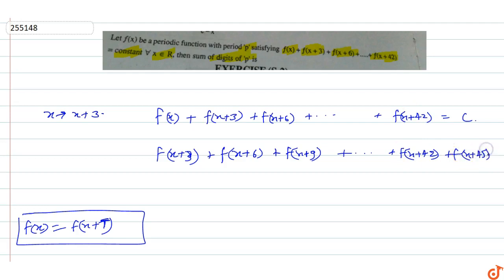Now subtract equation 2 from equation 1. Here f(x+3) cancels out, f(x+6) cancels out, f(x+9) cancels out.